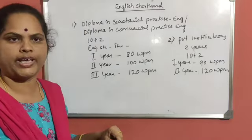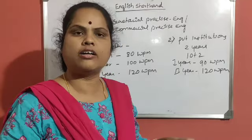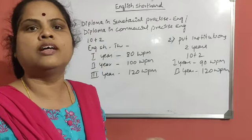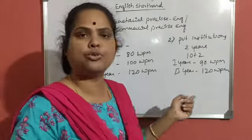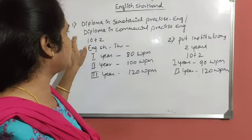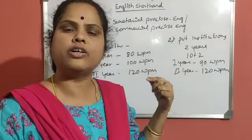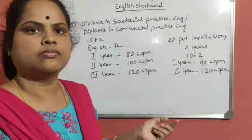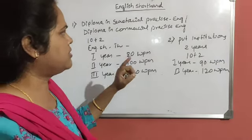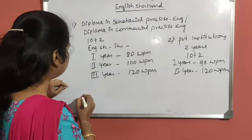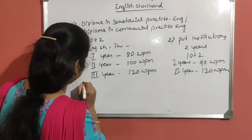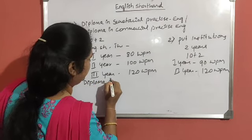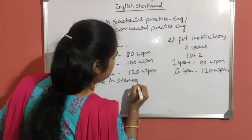So these are the two ways — after 10th or 12th standard you can enroll for English Shorthand. Even after graduation, you can do it through private institutions. After completing the diploma you can also go for graduation. For students outside Karnataka, there is a course called Diploma in Stenography, which is a 2-year duration.